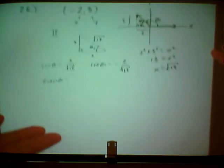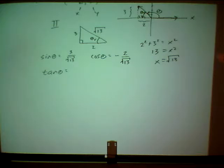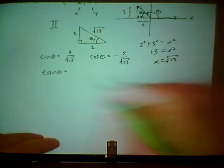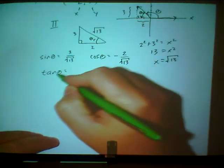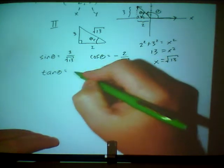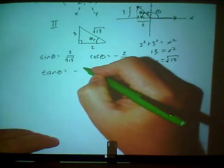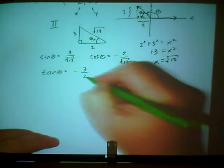The tangent, opposite over adjacent. Once again, the tangent is negative in the second quadrant. So I put a negative opposite over adjacent.